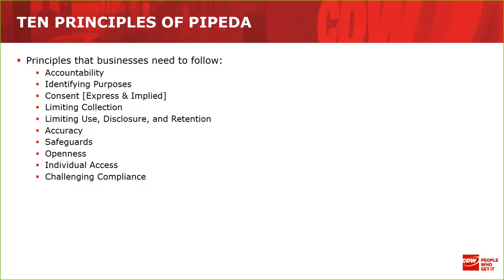Eighth: Openness — an organization must make detailed information about its policies and practices relating to the management of personal information publicly and readily available. If someone asks for your legal policies or acceptable use policies around data collection, you have to be able to provide that promptly — you can't make them wait six weeks. Hopefully organizations on the line already have a policy in place; if not, that's something to bring up with legal counsel.